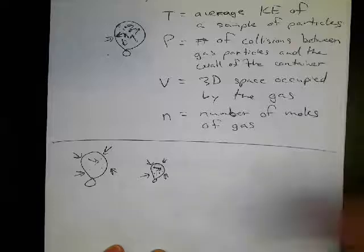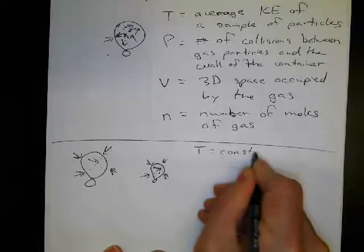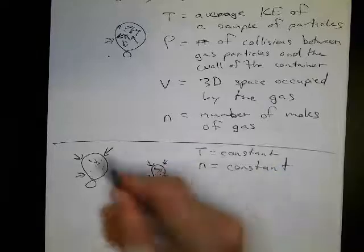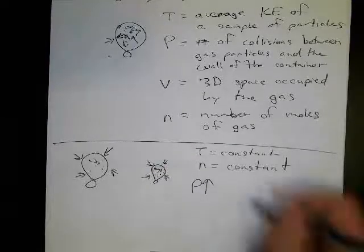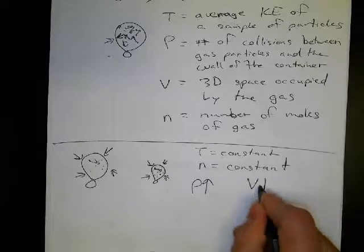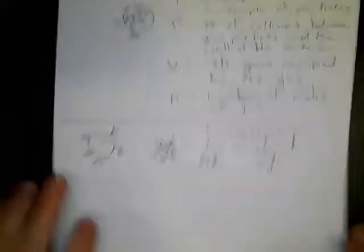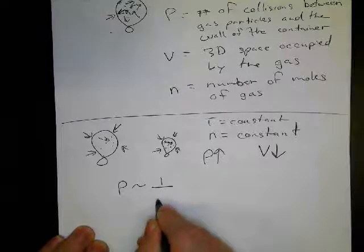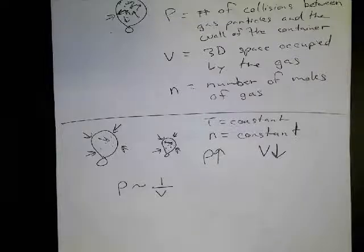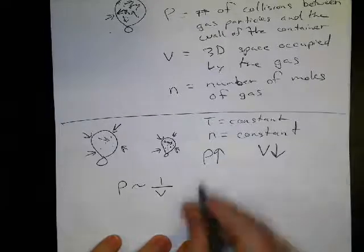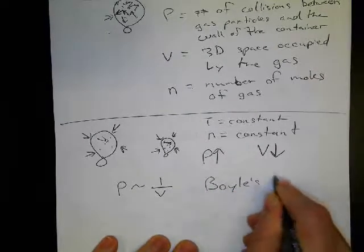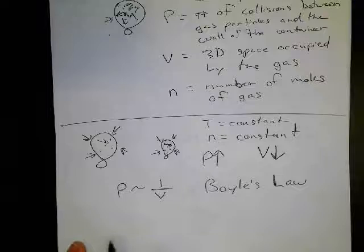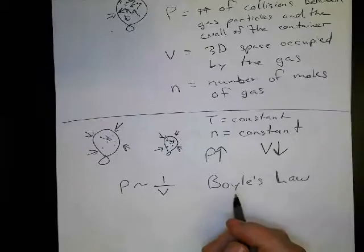So with temperature constant and number of moles constant, when we increased the pressure, the volume decreased. This is known as an inverse relationship — pressure is proportional to the inverse of volume. This was figured out by a chemist named Boyle, so it's called Boyle's Law. When you increase pressure, you decrease volume; or when you increase volume, you decrease pressure.